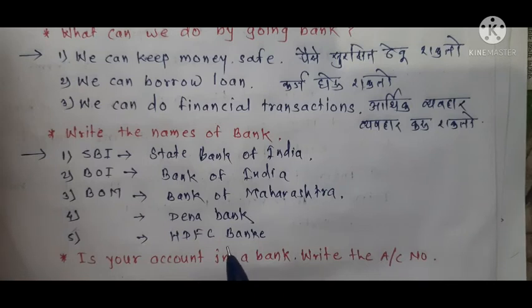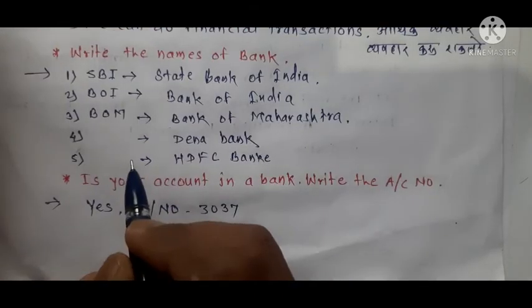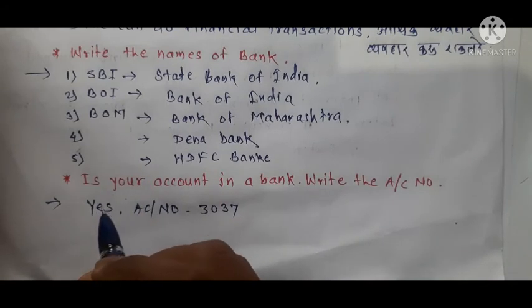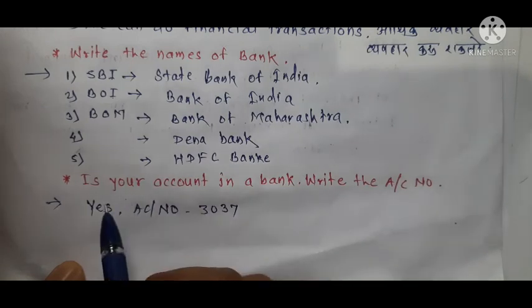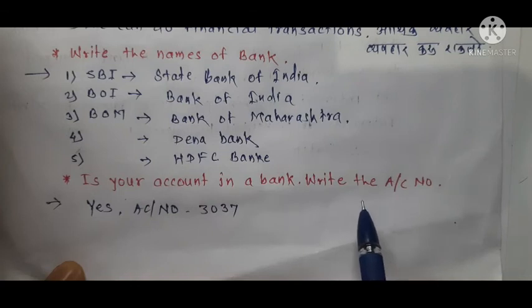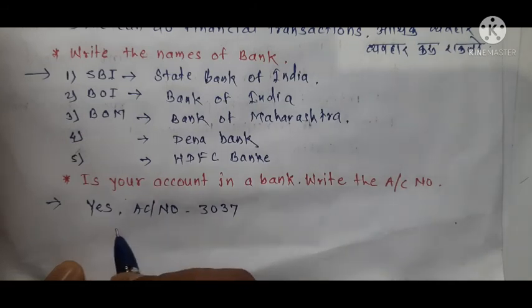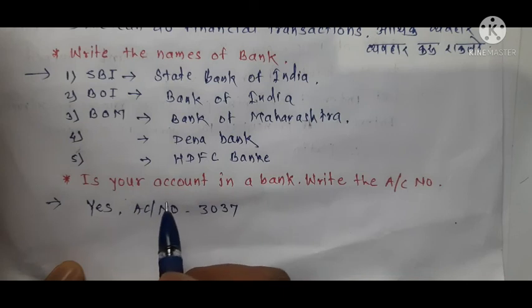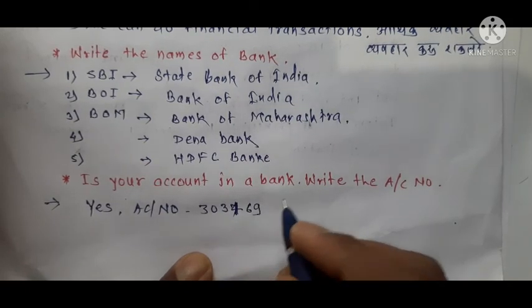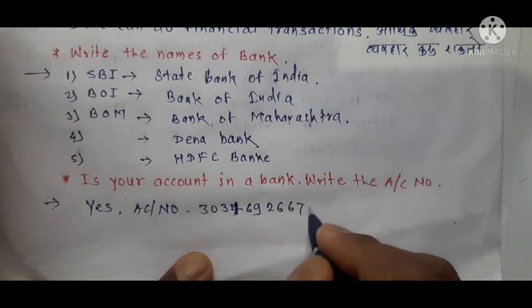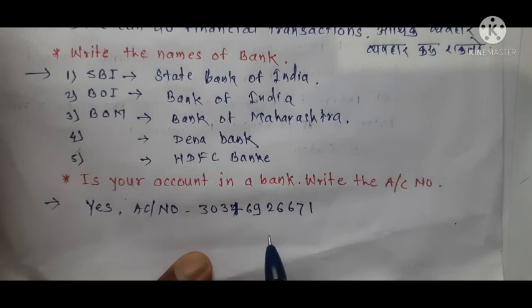Third question: which is your account in a bank? Write the account number. Think — do you have a bank account? If yes, write yes and your account number; if no, write no. For example, my account number is 3034692 6671.